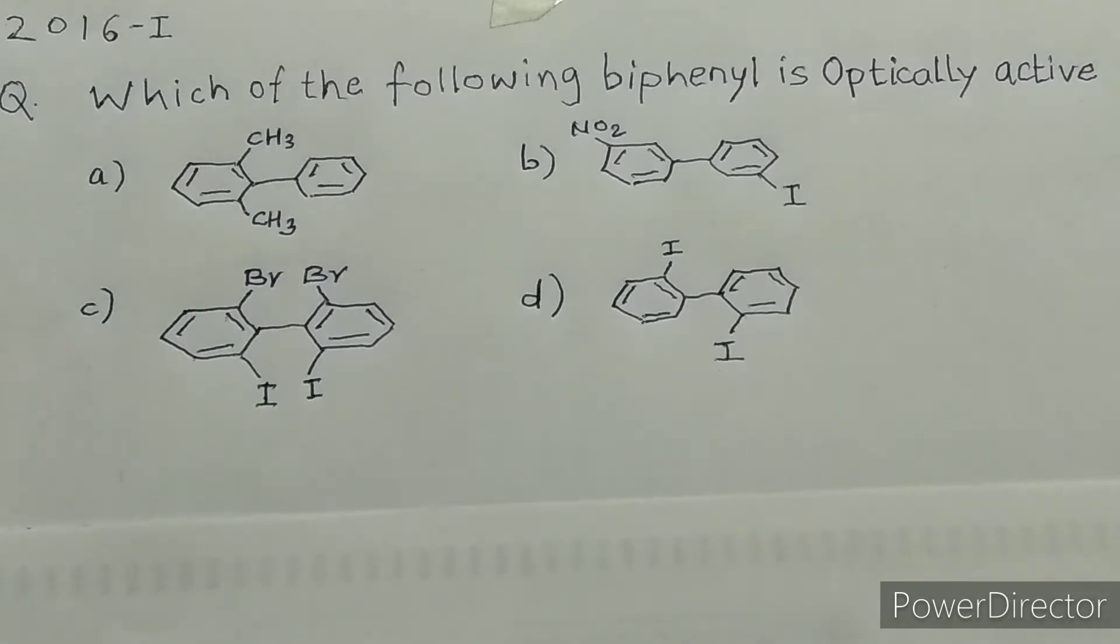When we talk about optical activity, two conditions come to mind. First, the molecule must have an asymmetric chiral carbon atom, and second, the molecule must have a non-superimposable mirror image. But biphenyl is a different case, an exceptional case.